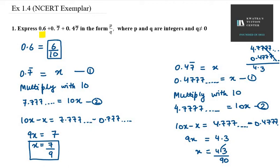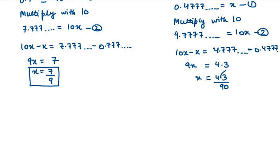So we have 3 values. First is 6/10, second is 7/9, third is 43/90. Now we have to add them. So first was 6/10, second was 7/9, third is 43/90. Now what will the LCM be? 90.